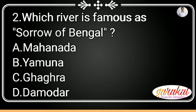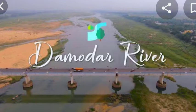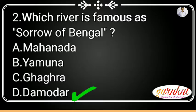Question two: Which river is famous as the sorrow of Bengal? Option A: Mahananda, B: Yamuna, C: Ghaagra, D: Damodar. So, the answer is D — Damodar is the sorrow of Bengal. Damodar, option D, is the answer.